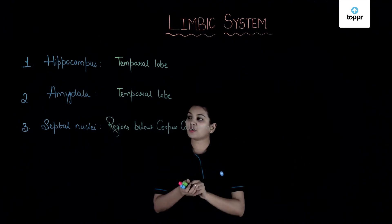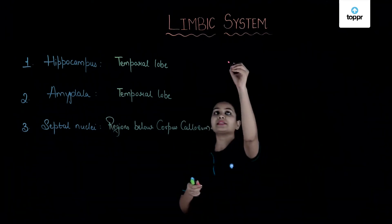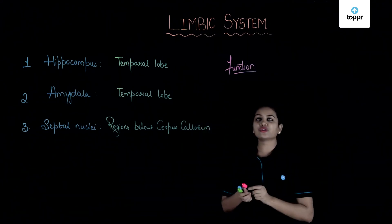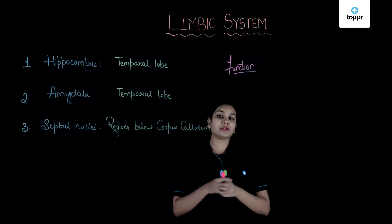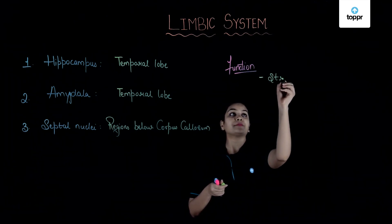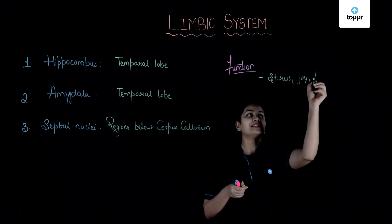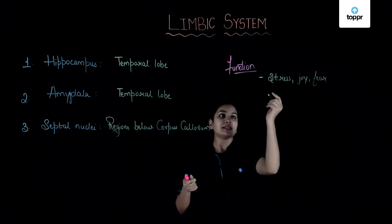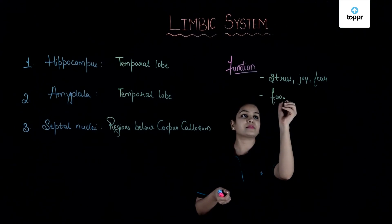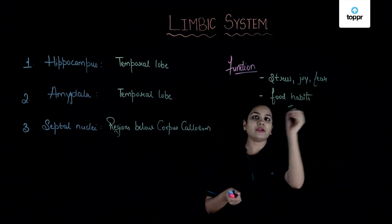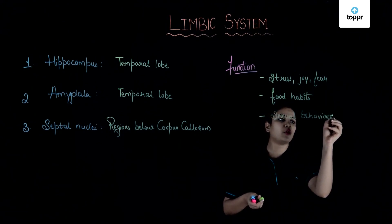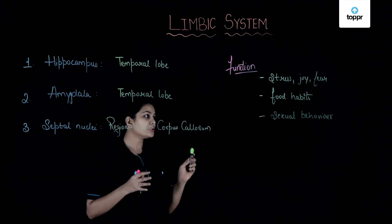So these are the main parts of the limbic system. Now coming to the functions — this limbic system is also called the emotional brain, because all these parts are considered responsible for many emotions in our body, such as stress, joy, fear, fight and flight responses. The limbic system is also responsible for taking care of our food habits and sexual behavior.